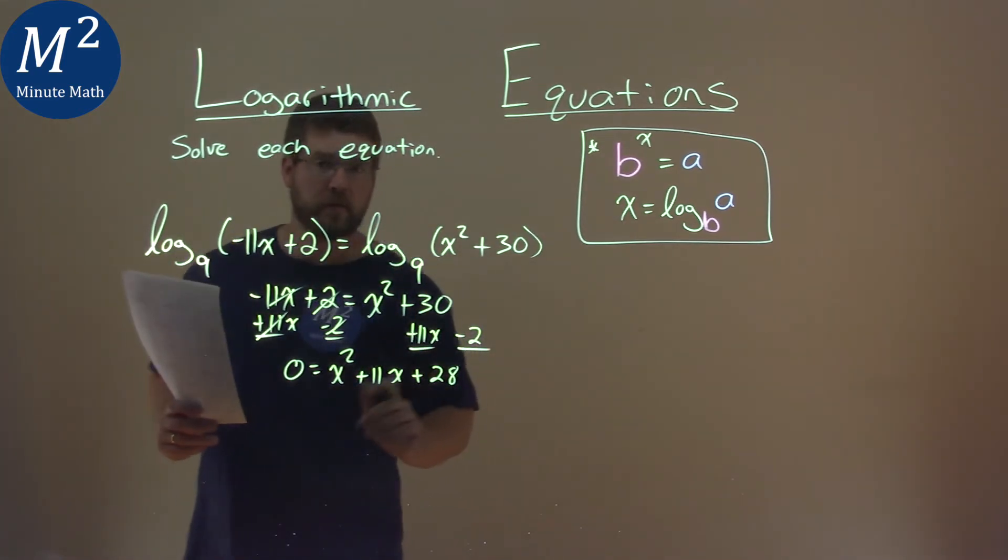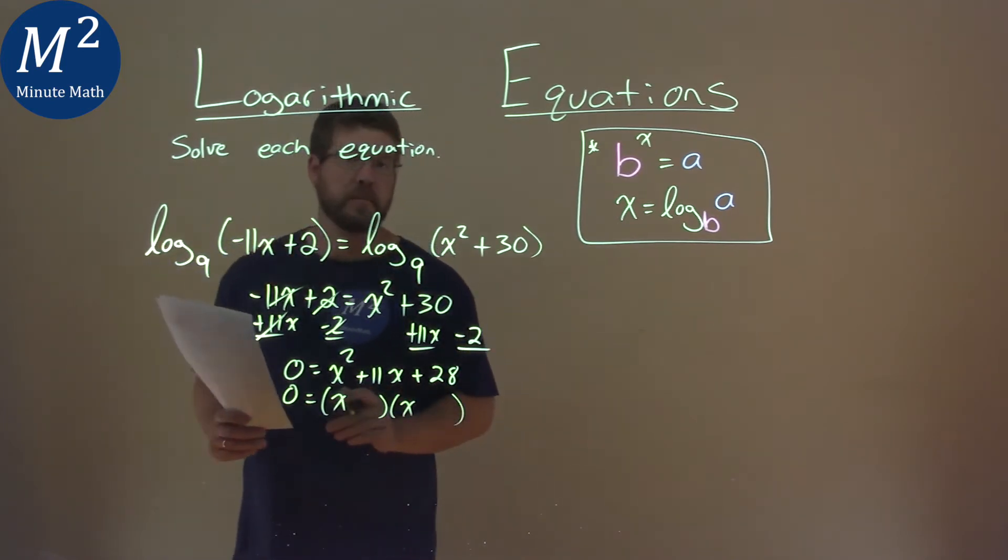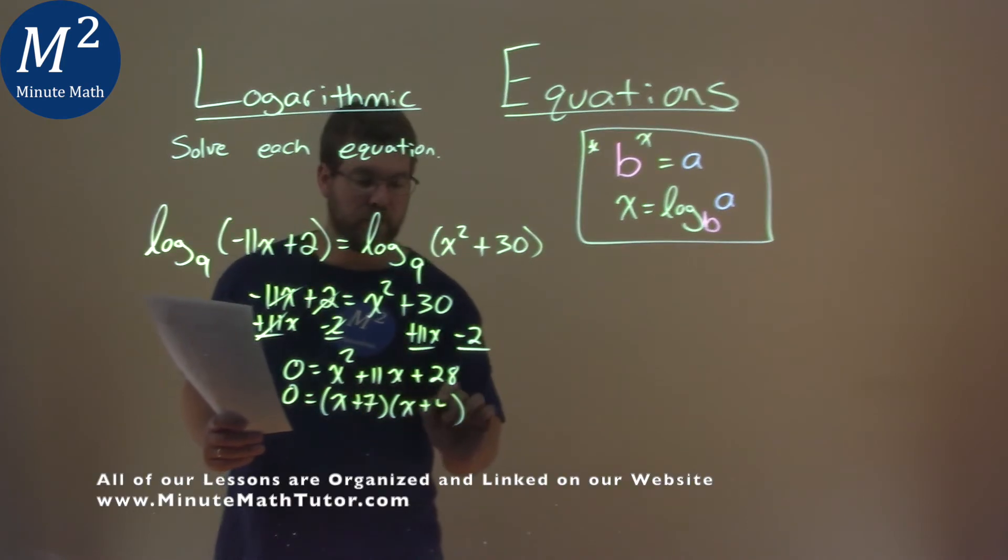Well, this looks like we can factor it. So 0 equals, what two numbers multiply to be 28 but add to be 11, and that's 7 and 4.